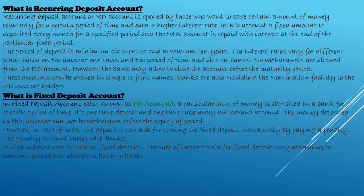For example, if I open a recurring deposit account today on June 3rd for one year, the money will mature on June 3rd the following year. Every month on the same date, you must deposit the minimum amount — starting from 500 rupees. If you have a salary account, you can arrange for the amount to be automatically transferred from your salary directly into your recurring deposit account.